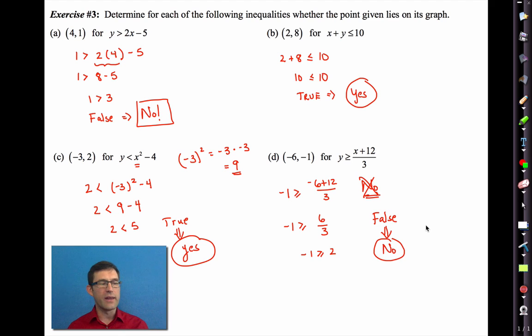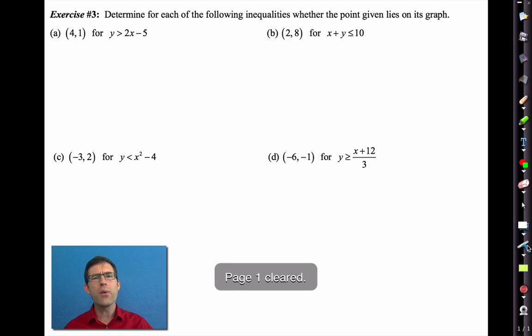So really, this is fairly easy. We will always know whether any given point lies on the graph of an equation or an inequality by whether or not it makes that inequality or equation true or false. So now we're actually going to go on.